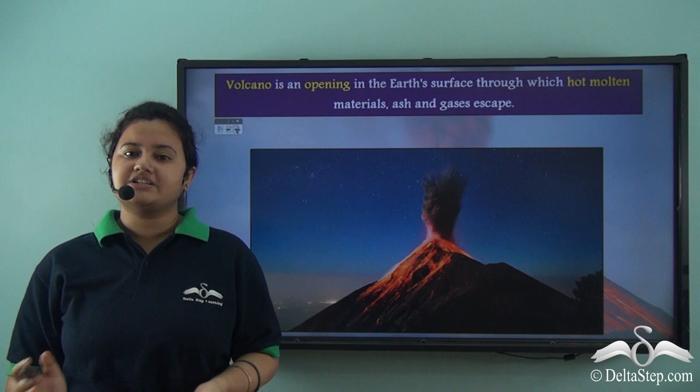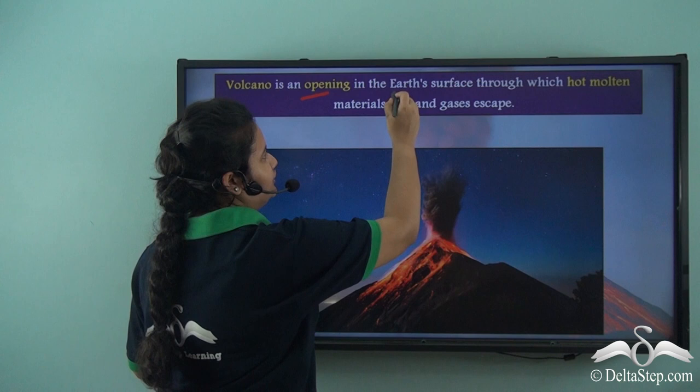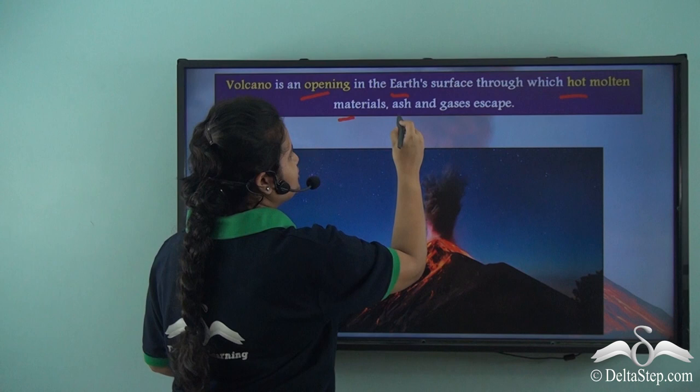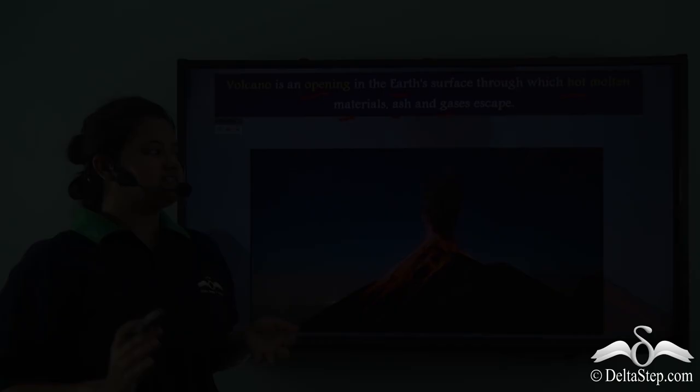So what is a volcano? A volcano is an opening in the Earth's surface through which hot molten materials, ash, and gases escape.